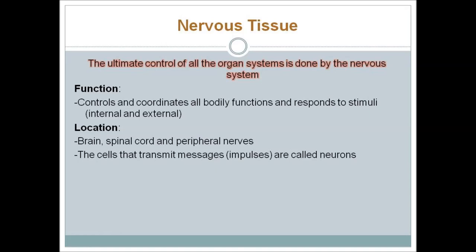Our next tissue is nervous tissue. The ultimate control of all organ systems is done by the nervous system. Its function is to control and coordinate all bodily functions and respond to stimuli, both internal and external. It is located in the brain, spinal cord, and peripheral nerves. The cells that transmit messages and impulses are called neurons.